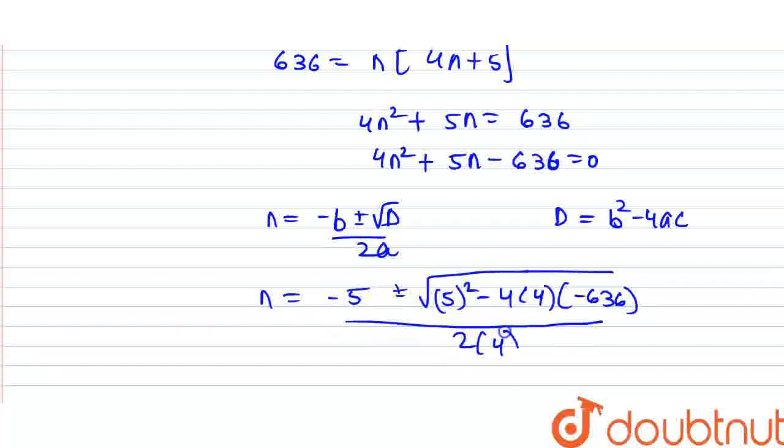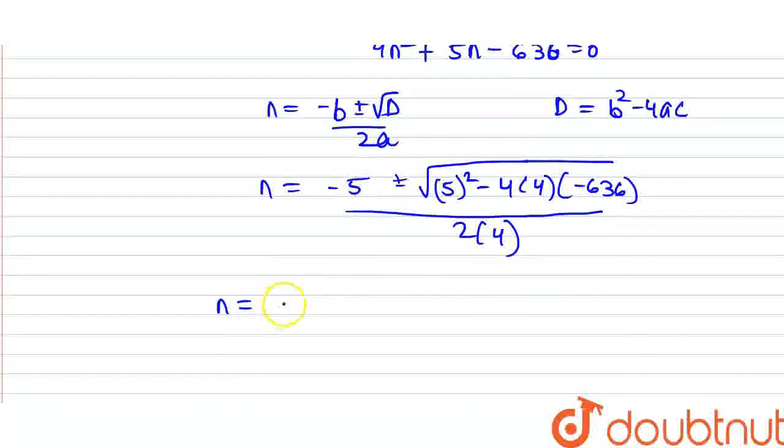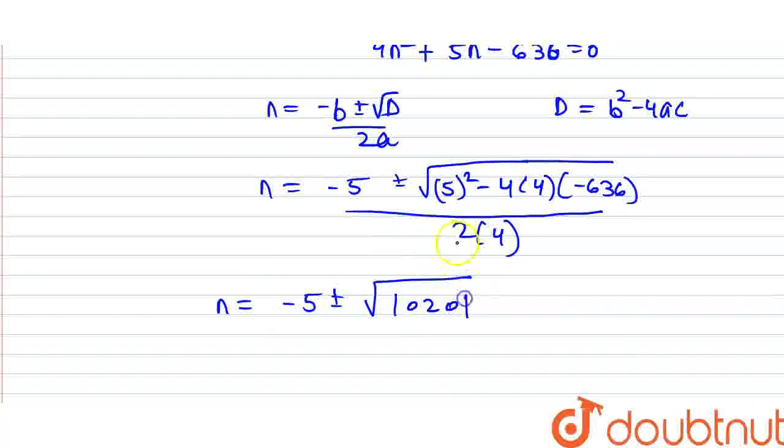Now we solve: minus 5 plus minus... Solving: 25 minus 4 times 4 times minus 636 plus 25 equals 10201.